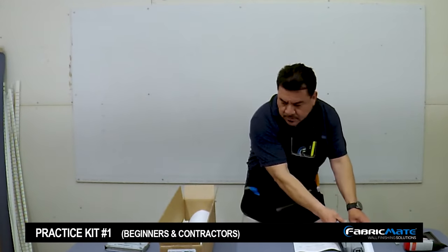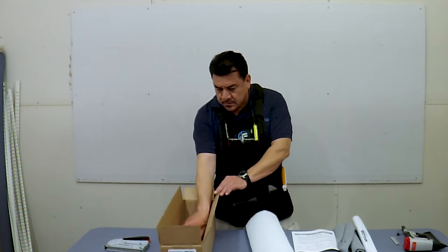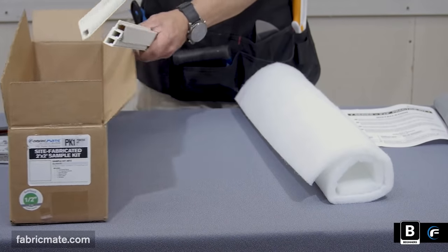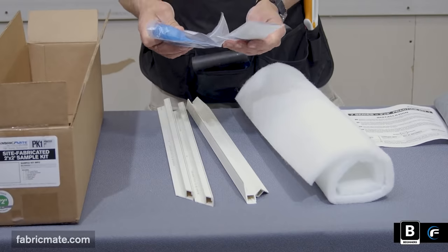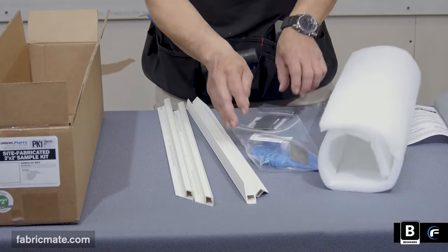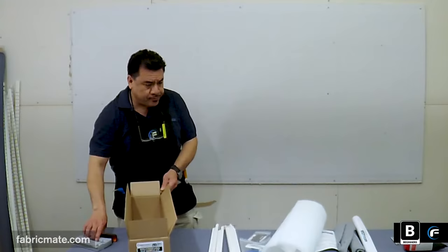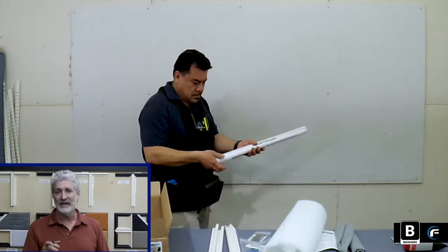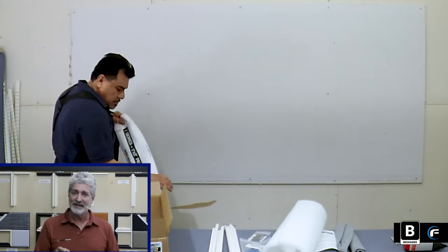The PK-1 practice kit is for those people that want to get going with a site-fabricated system. They might not be sure or comfortable yet if it's something for them. This little kit will give you the basics. You're going to get a kit that's packed with a template, everything pre-cut. The fabric mounting frame is pre-cut, the backing material is pre-cut, the fabric is pre-cut. So it's a great way to get your head around and your feet wet with the practice kit.